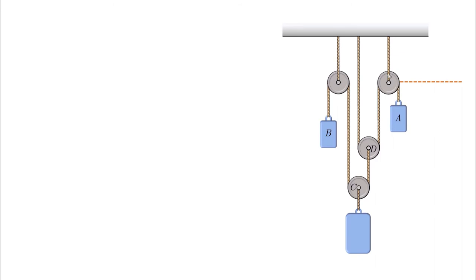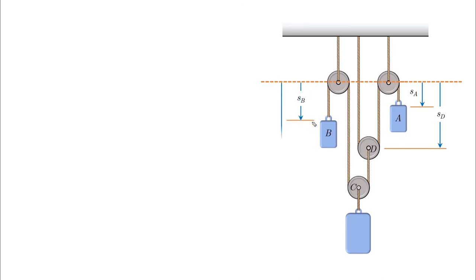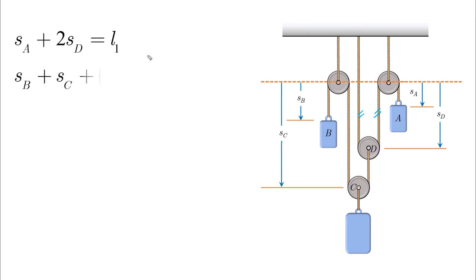Here is a situation with two cables — one connected to A and another connected to B and C. Whether C is placed here or on the block doesn't matter. We specify a fixed datum, then sA, then sD (since D is also moving), then sB and sC on the left side. The length of the first cable is sA plus 2sD equals L1. The second cable is sB plus sC plus the segment sC minus sD.